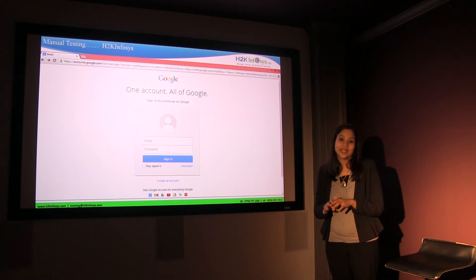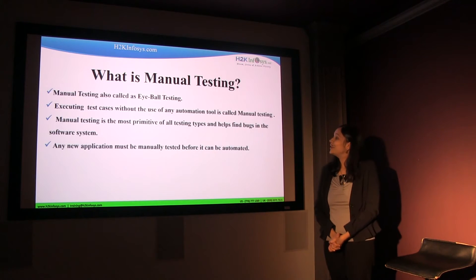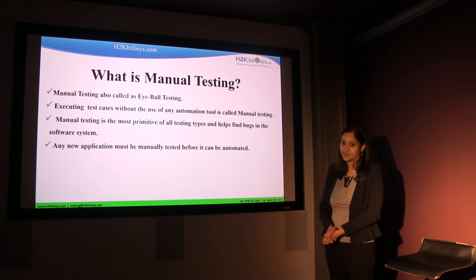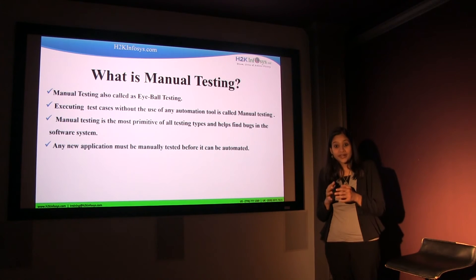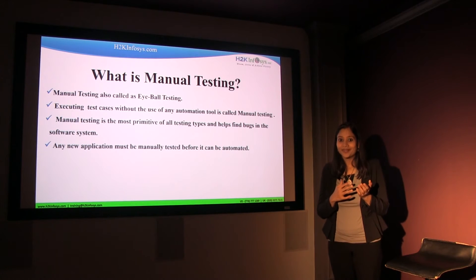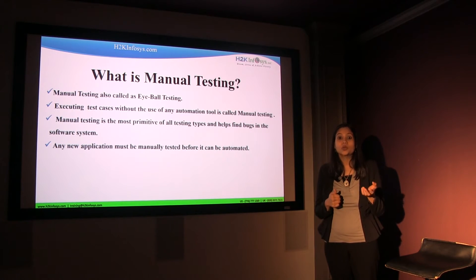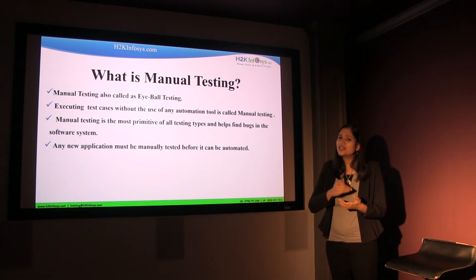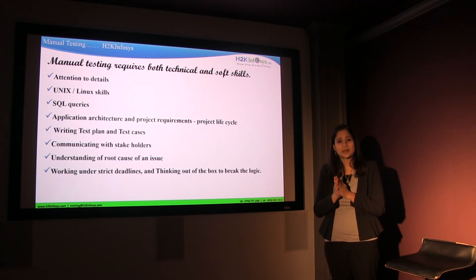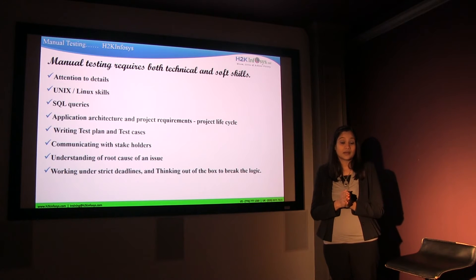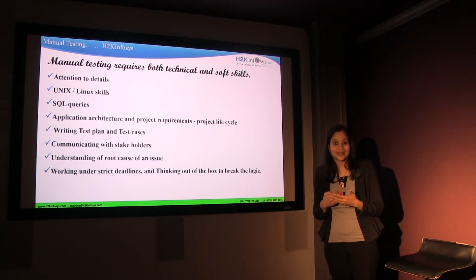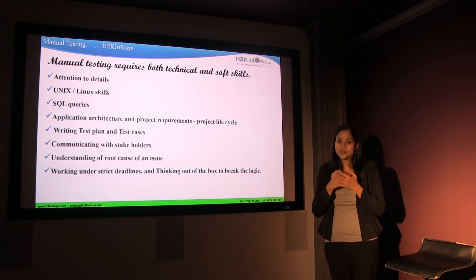You are physically checking whether the application is working the way it is supposed to work. Manual testing is the most primitive of all testing types and helps find bugs in the software system — it's absolutely the basic way to find out whether there is a bug or not. Before using any automation tools, you manually test to see whether it's working. Any new application must be manually tested before it can be automated, as automation is always a subsequent process.